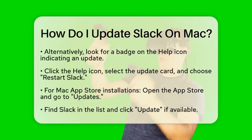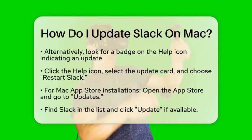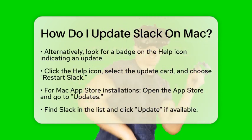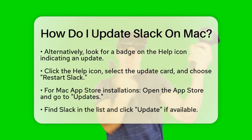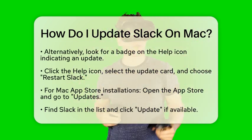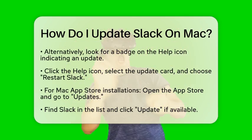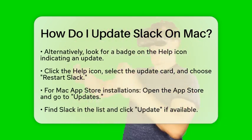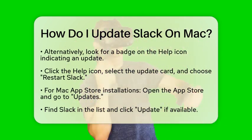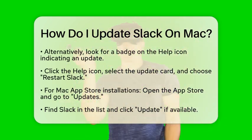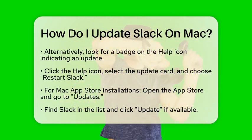Alternatively, if you notice a badge on the help icon within Slack, that means an update is available. You can click on the help icon, then click the update card, and select Restart Slack to apply the update.